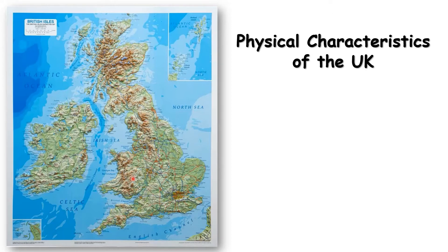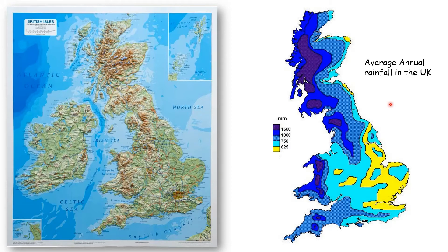Within Wales, we've got the Cambrian Mountains and Snowdonia. Most of the UK's mountains are found to the north and to the west, including the mountains of Northern Ireland. If we compare that to a rainfall map of the UK, it's almost identical. We get the majority of our rain — the dark blue colour — to the north and to the west of the country, which matches perfectly with our mountain ranges.